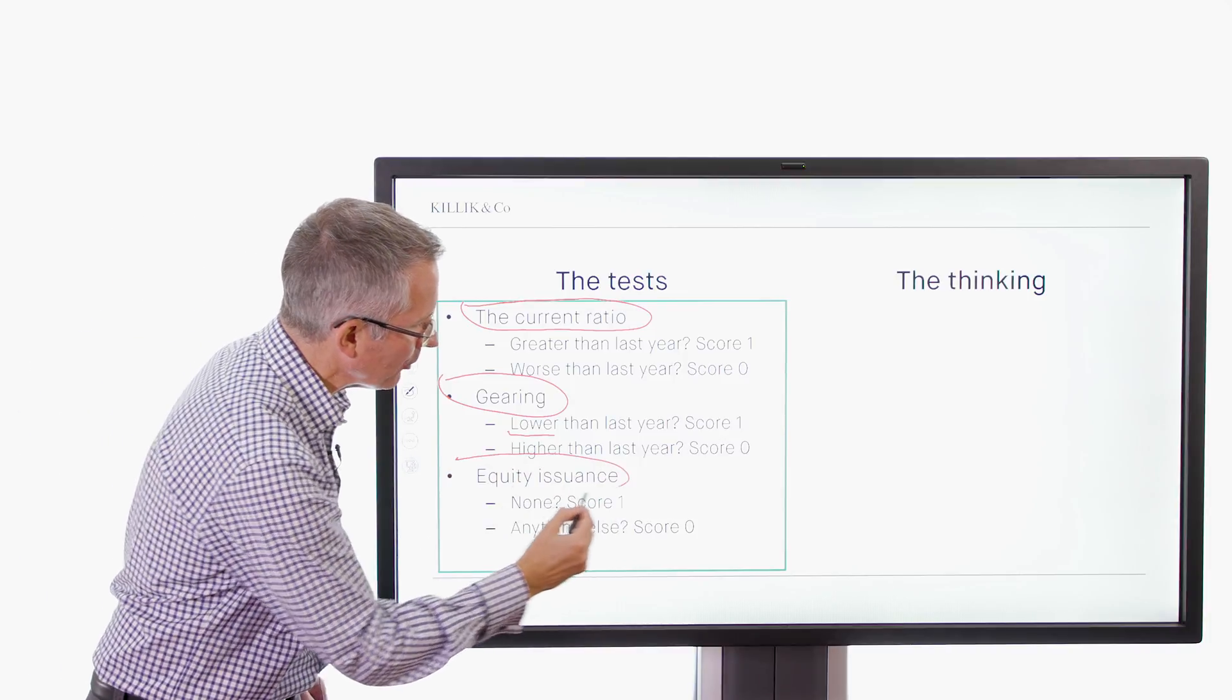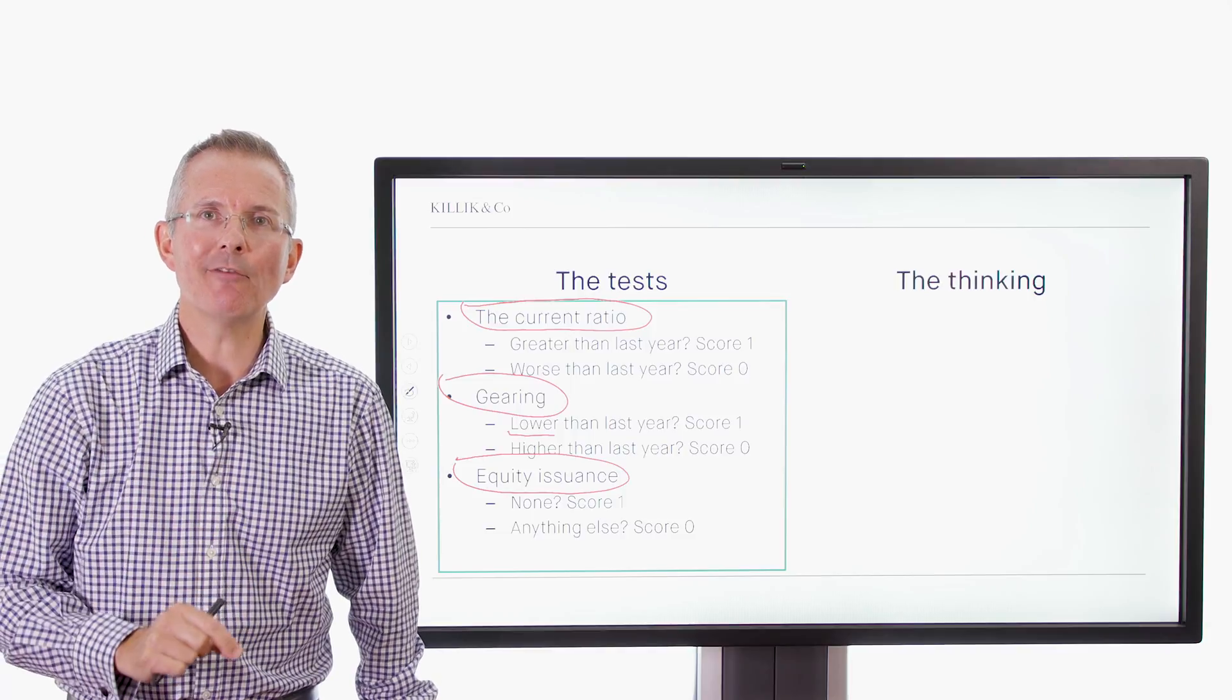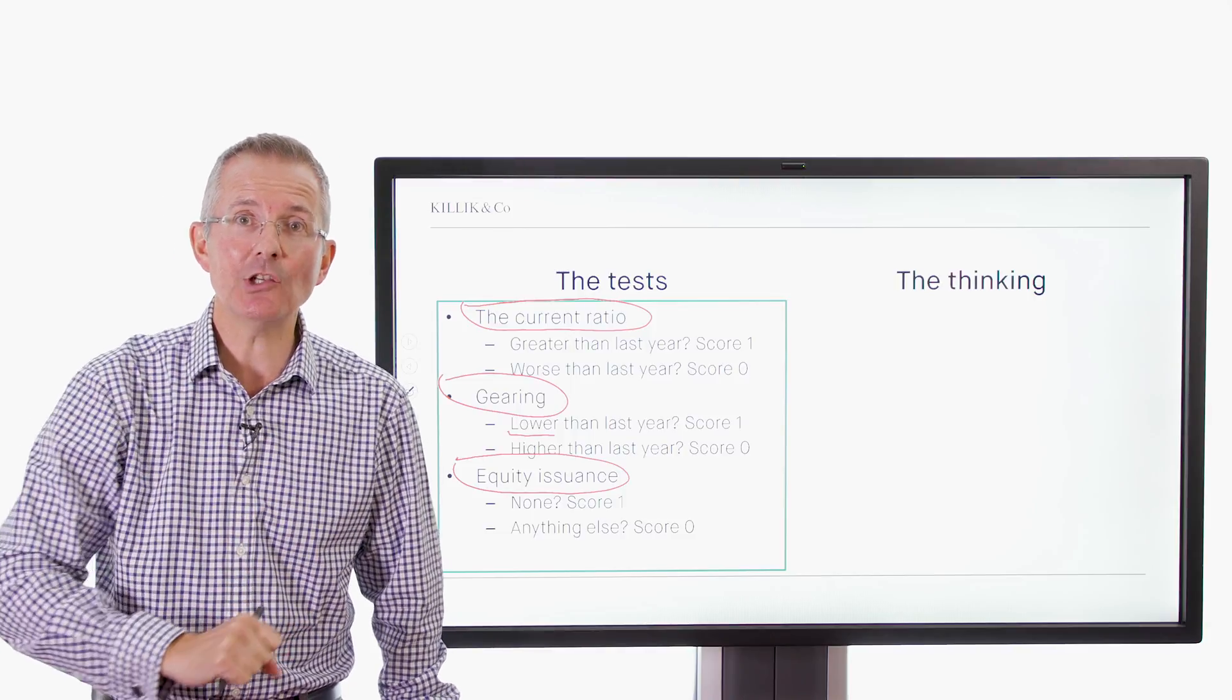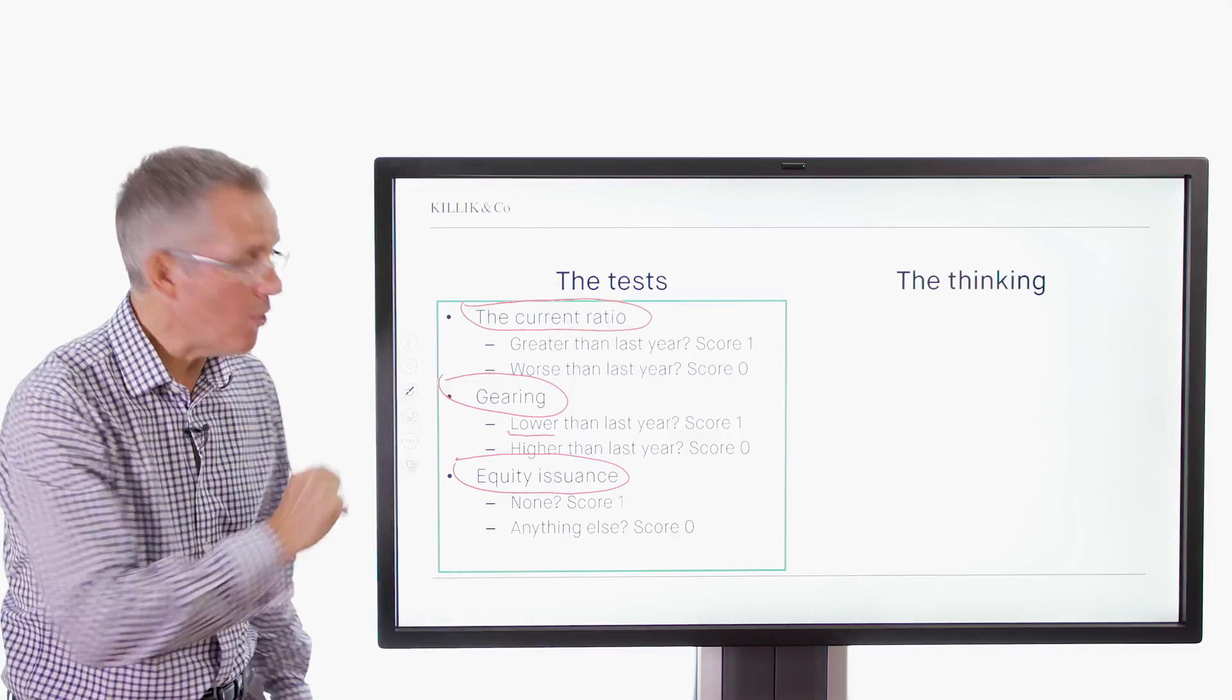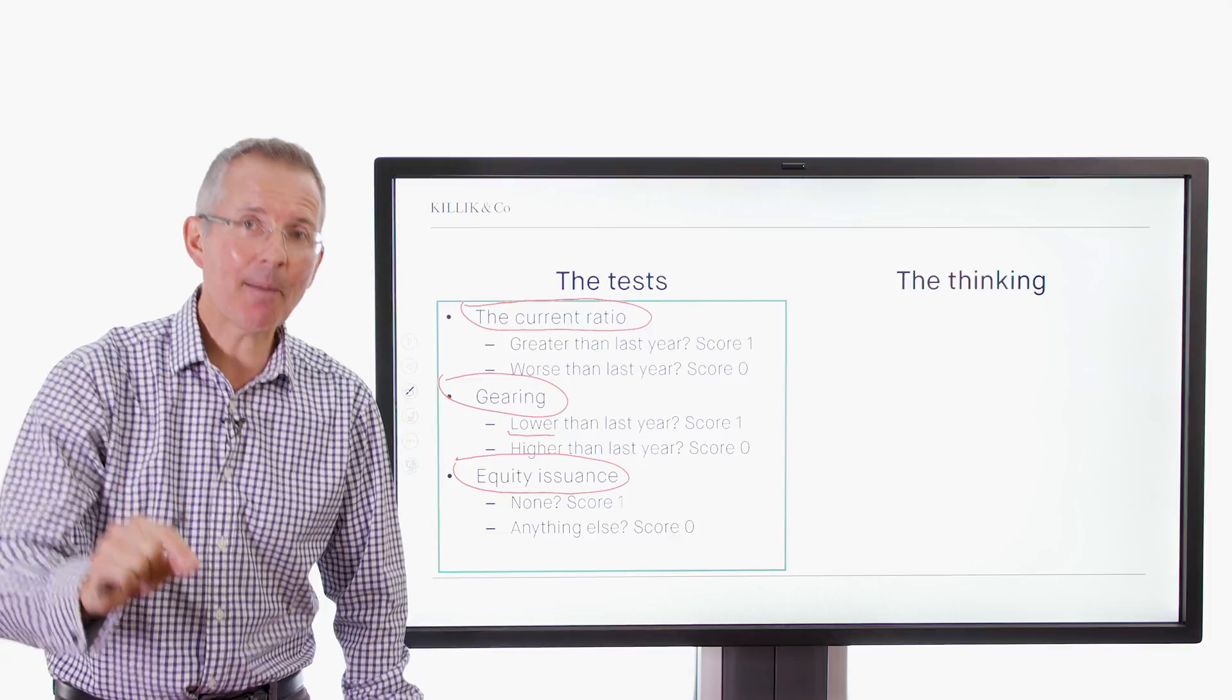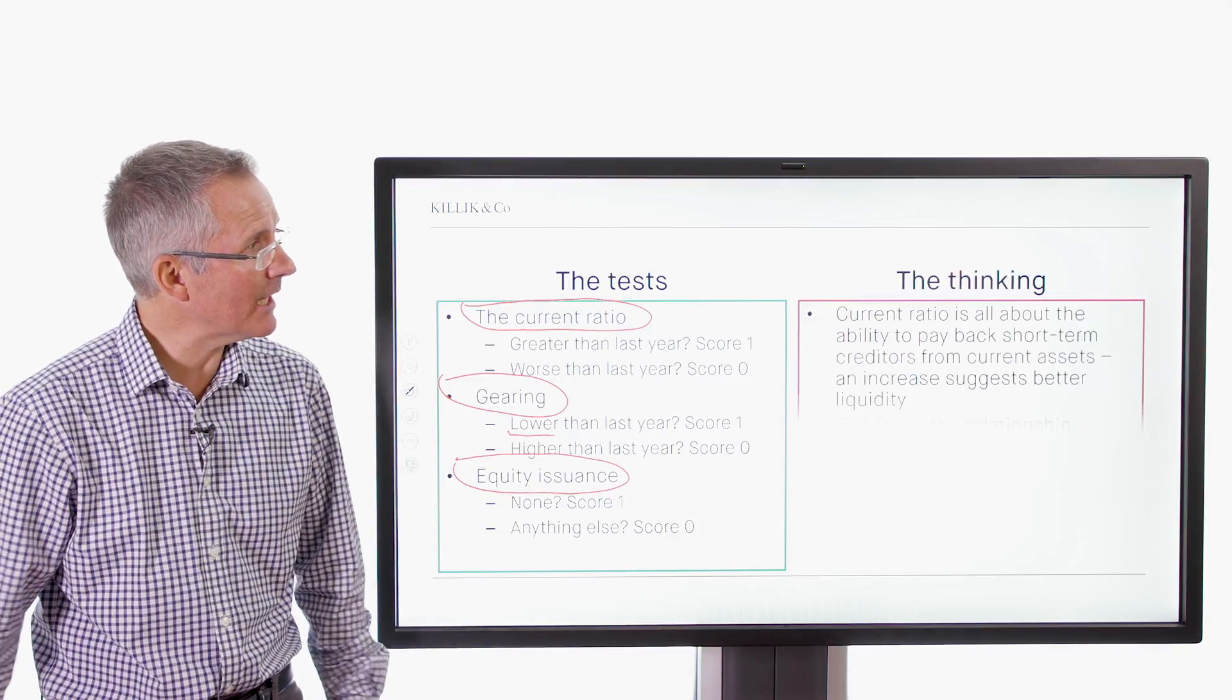And then equity issuance, looking at your capital structure. Shareholders should be a last resort place you go for funding. It's not a good sign, according to Piotroski, if you have to keep going cap in hand to your shareholders. So no equity issuance scores you a point there. If you've had to go to them cap in hand, begging for more money, don't have a point. So some more points to score there, potentially.